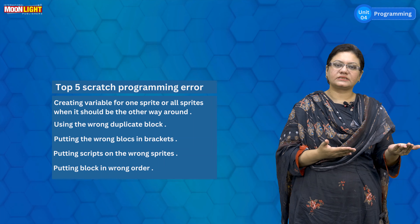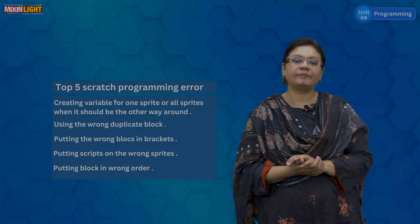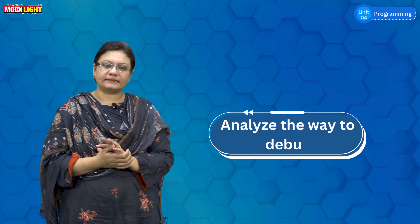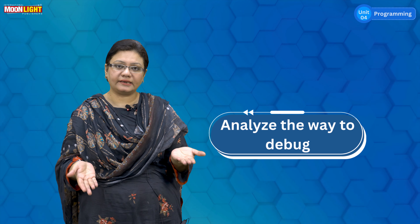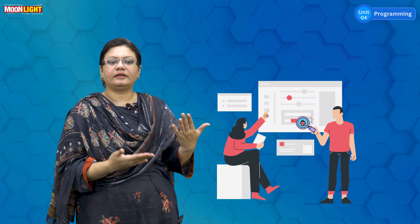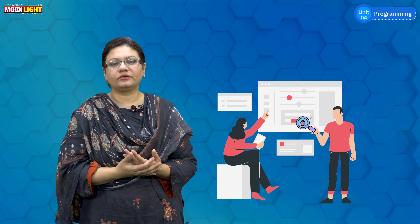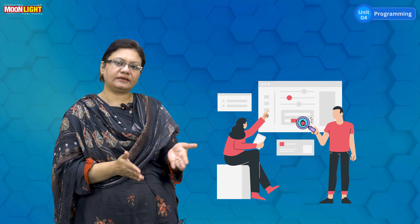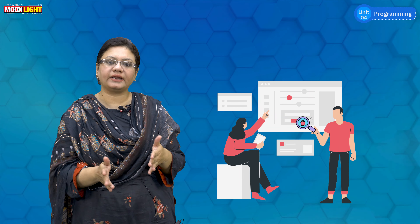You have to check if something is skipped or done out of order. Debugging is the way to debug your program. The purpose of debugging is to locate and find the error. You have to locate it, find it, and then remove it.